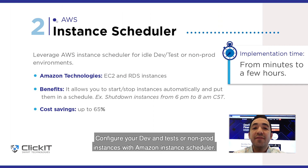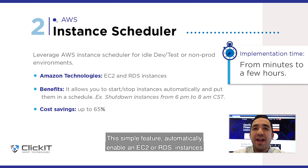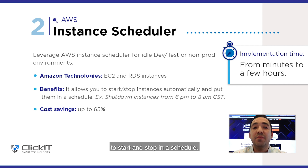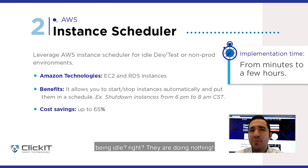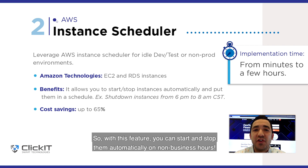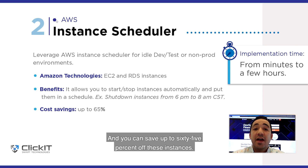Number 2: Configure your Dev, Test, or Non-Prod instances with Amazon Instance Scheduler. This simple feature automatically enables an EC2 or RDS instance to start and stop on a schedule. Think about it — what are your instances doing at night or on weekends? They're just idle, doing nothing. With this feature, you can start and stop them automatically on non-business hours, and you can save up to 65% on these instances.